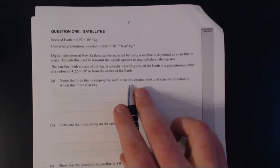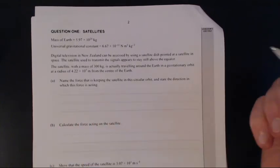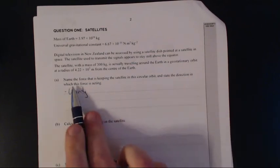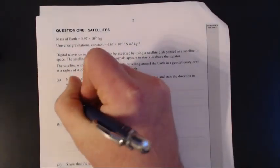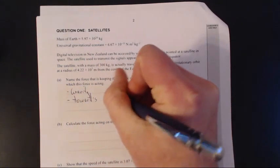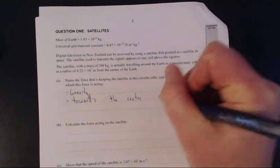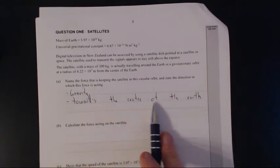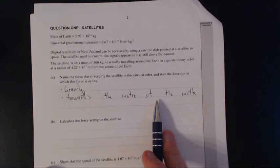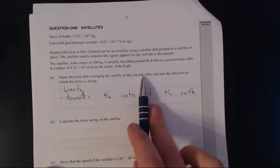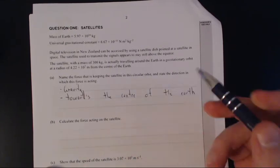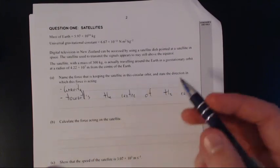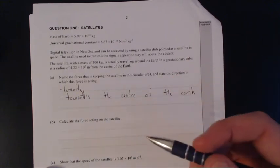So question 1a. Name the force that is keeping the satellite in the circular orbit and state the direction in which the force is acting. The force is gravity. The direction of the force is acting is towards the centre of the Earth. So this towards the centre of the Earth is from the satellite's perspective. That's the force keeping the satellite in orbit. If it was a force on the Earth, it would be pointing towards the satellite and it would be tiny compared to the mass of the Earth, but it would still be the same balancing of forces and that would be Newton's third law.